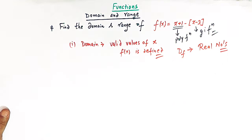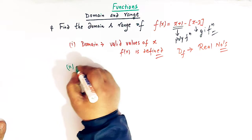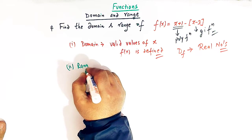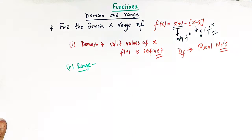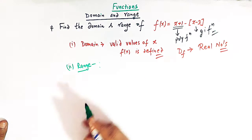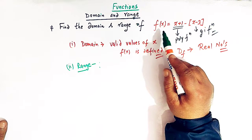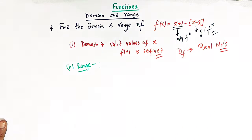Now let us find out the range of this function. To find the range, we have to make use of one important property of the greatest integer function. We will first derive the property which is going to be used to find out the range of this function.